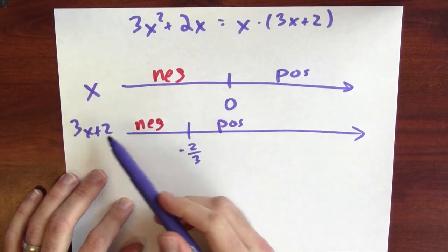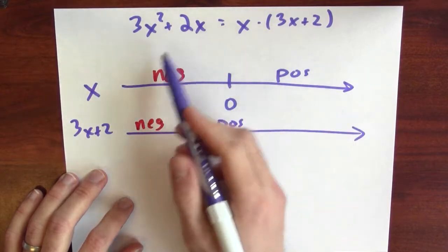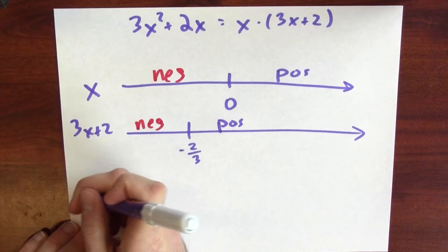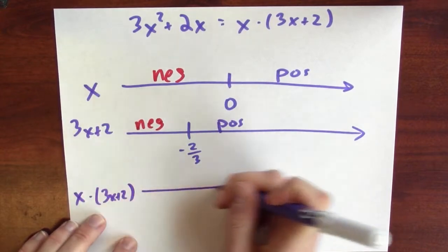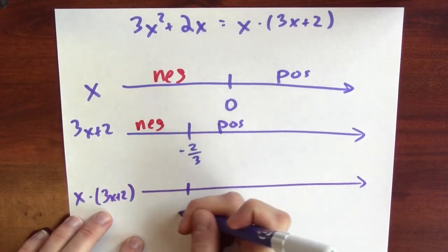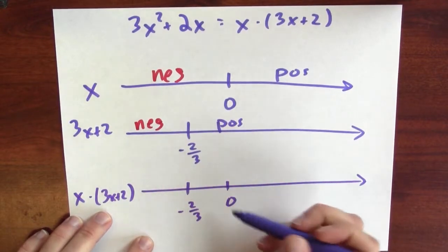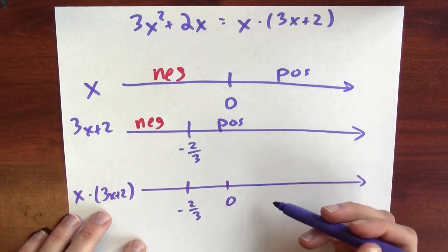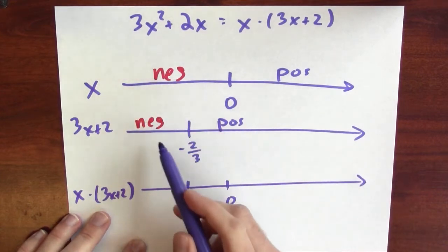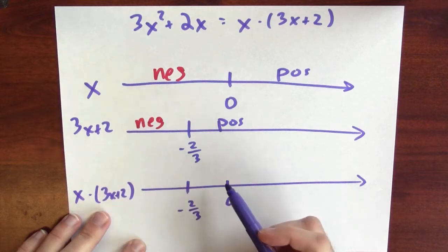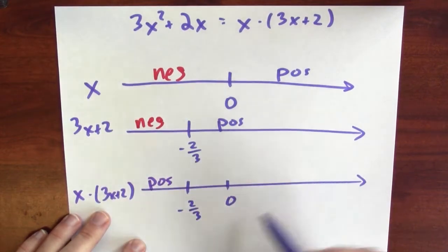I want to put x and (3x plus 2) together to know when their product is positive or negative. I'll write down the product x times (3x plus 2) and make a new number line, recording both critical points: minus 2/3 and 0. When x is less than minus 2/3, then x is negative and 3x plus 2 is negative, so the product is a negative times a negative, which is positive.